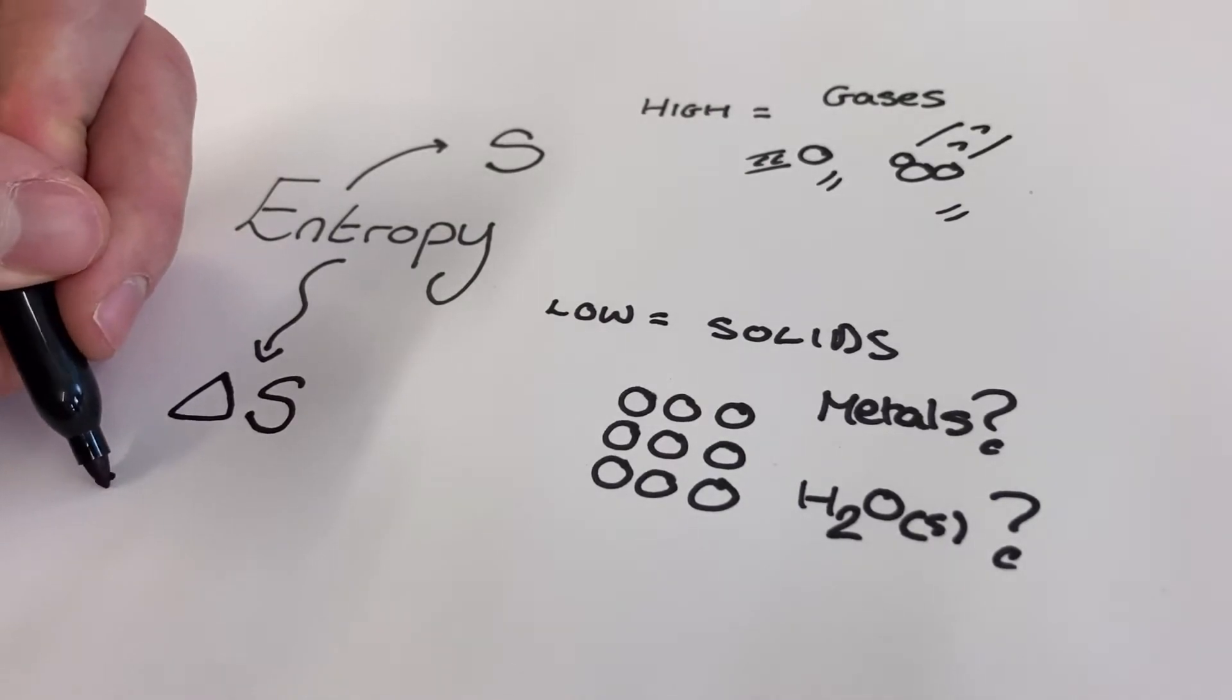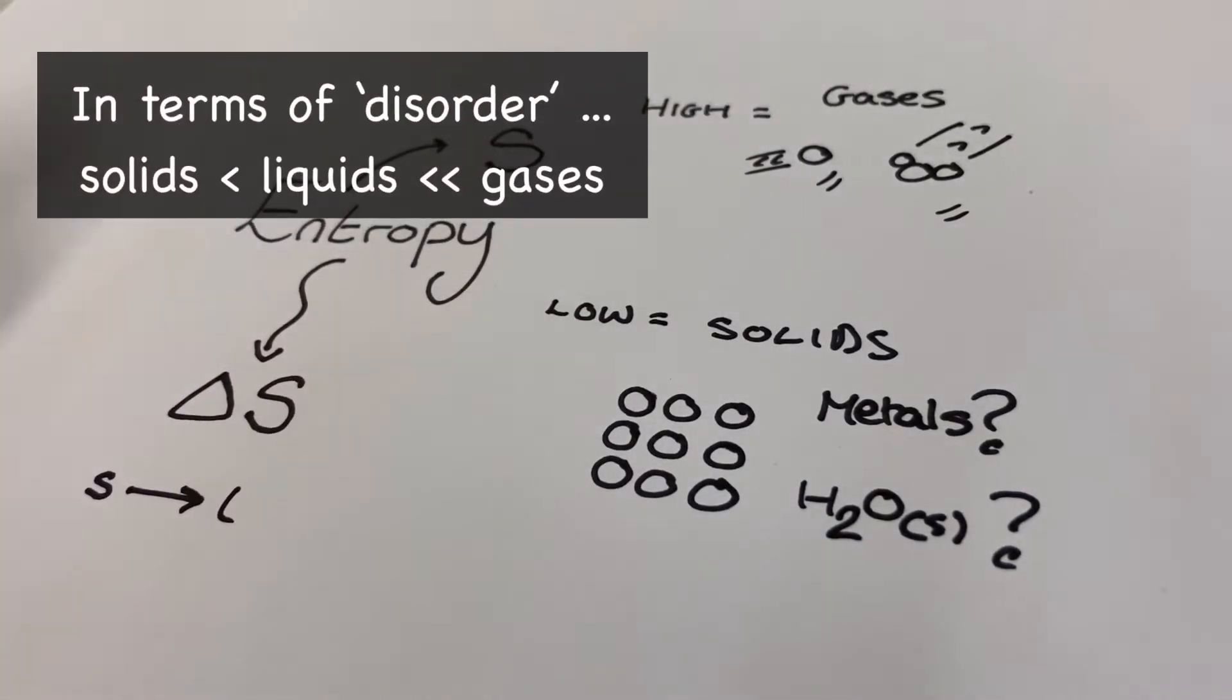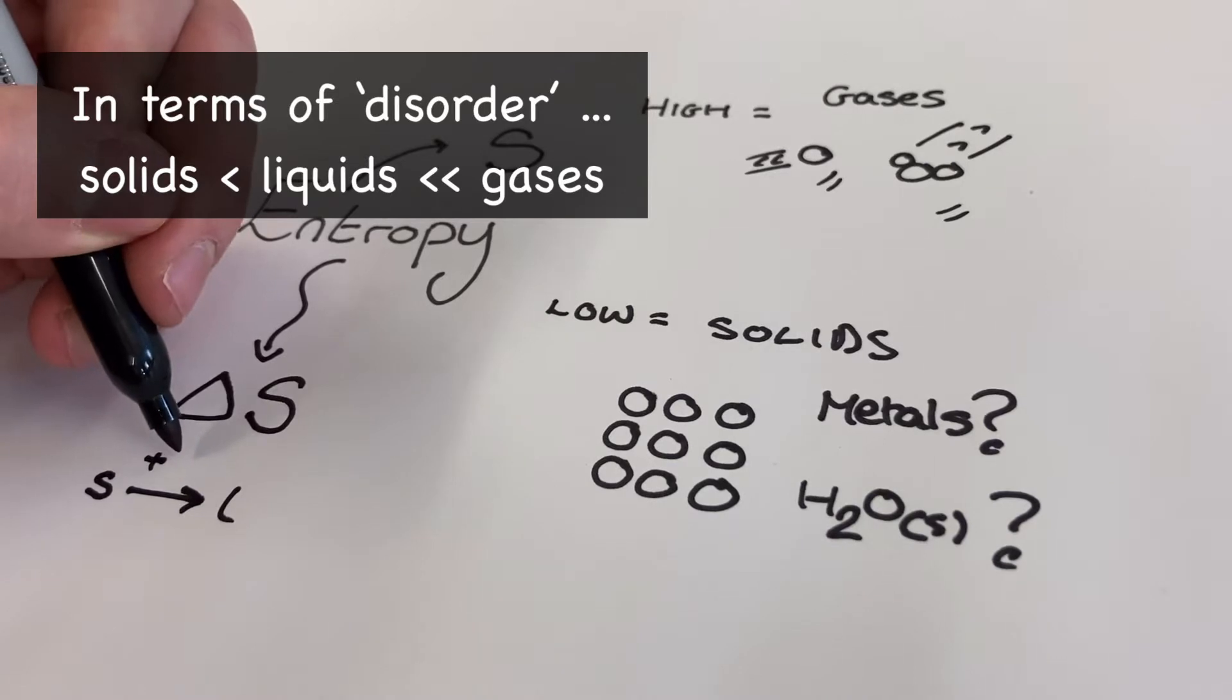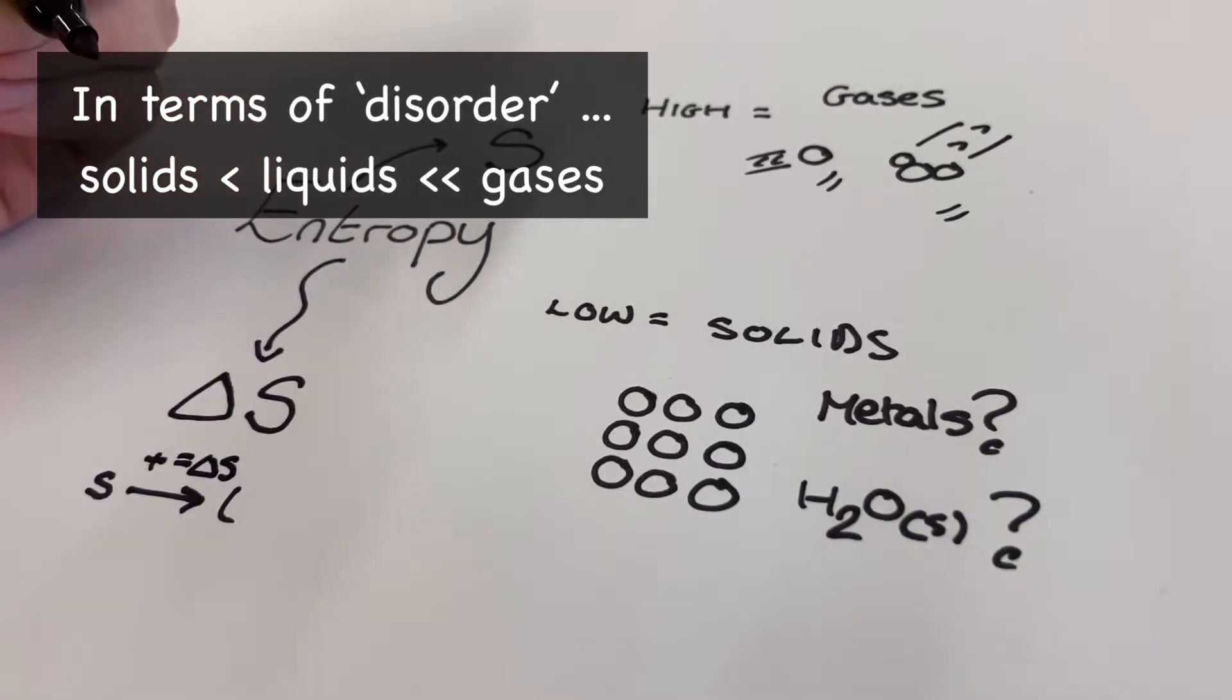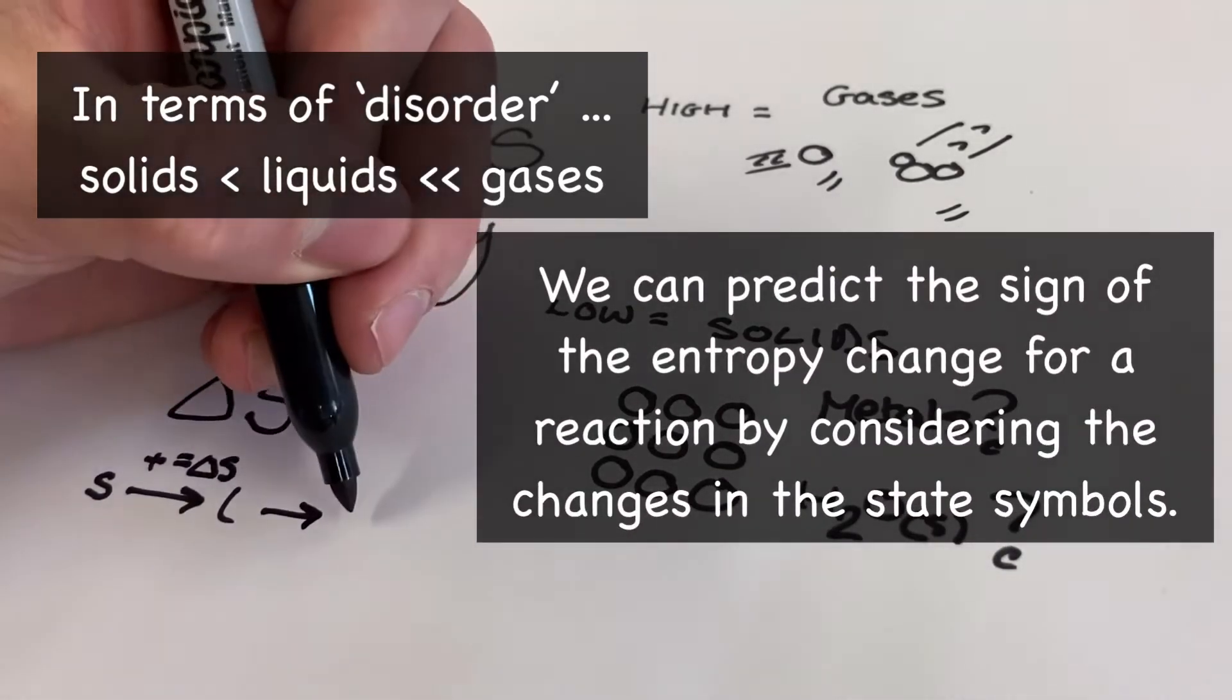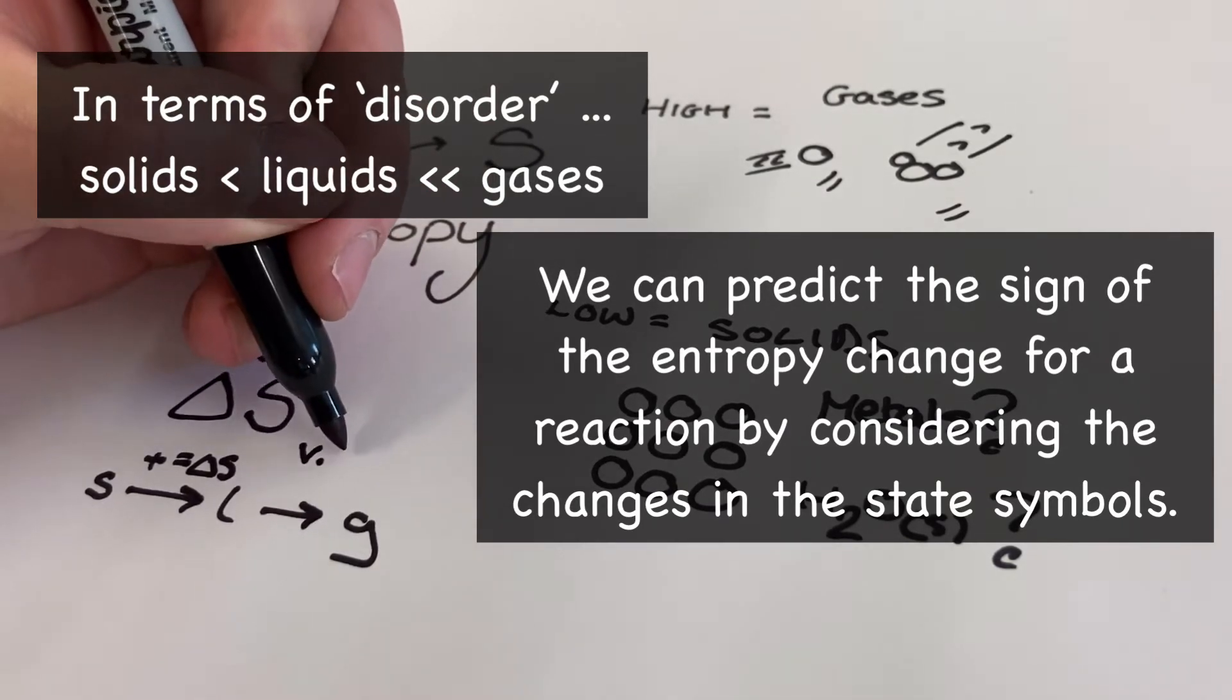I like to think that gases are king when it comes to entropy, and we can learn a lot about the entropy change of a reaction just by looking at gases in a reaction equation. Now, entropy changes, we actually need to be able to predict these as part of our A-level, and we can often use the physical states of our reactants and products to help us make these predictions.